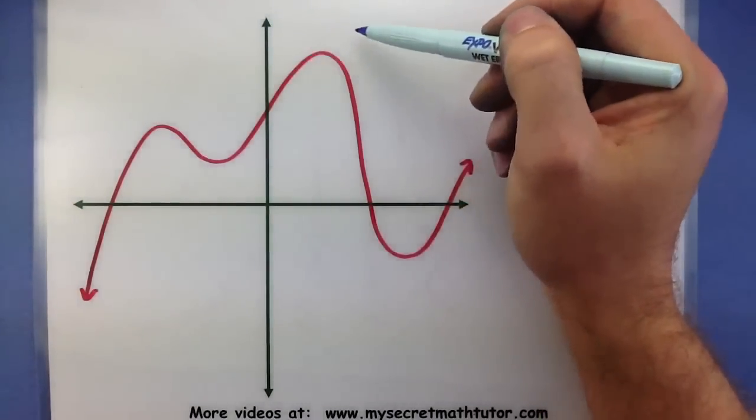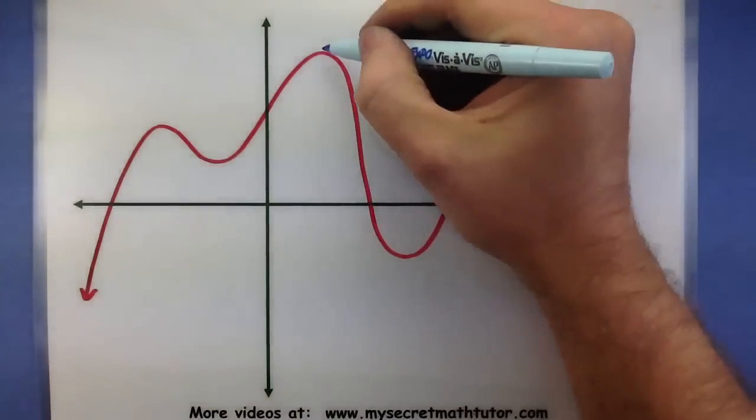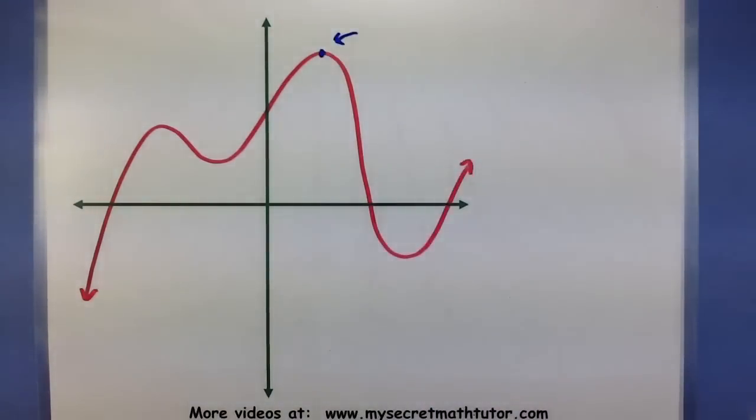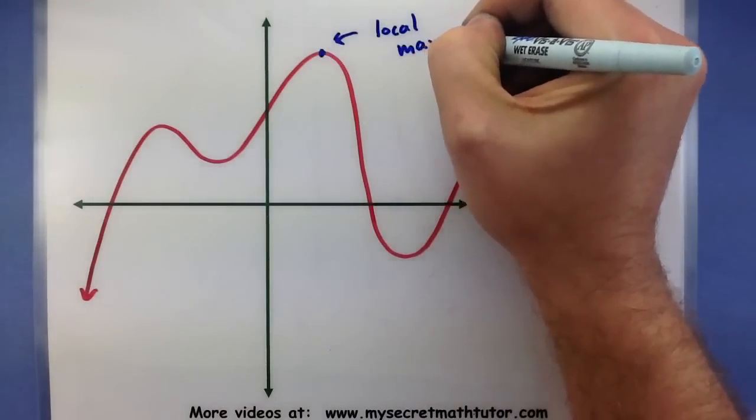However, what if I just wanted to look at this section of the graph? If I only looked at that particular section, then this point right here would be the highest of that section. So I can call that a local maximum.